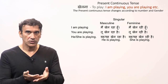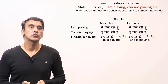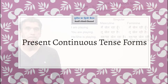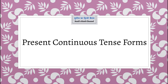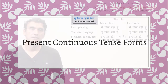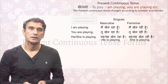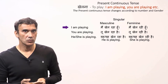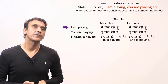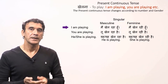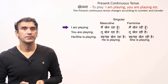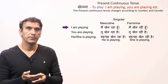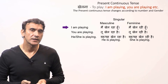Let's now take the verb 'khelna' (to play) and go through all the forms of the present continuous tense. The first person singular form is 'main khel raha hun' — I am playing. It's a masculine form, meaning a boy is uttering the sentence.